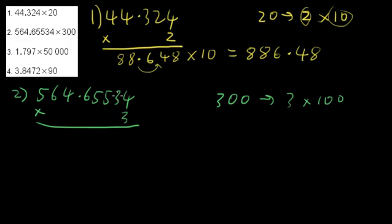So we can take 4 times 3 is 12. 3 times 3 is 9 plus 1 is 10. 3 times 5 is 15 plus 1 is 16. 3 times 6 is 18 plus 1 is 19.